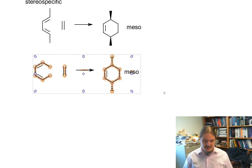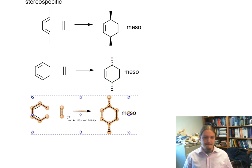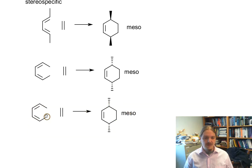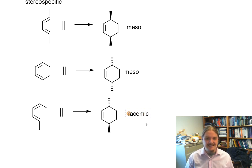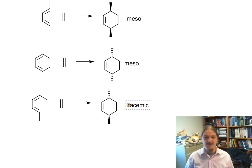But if we were doing the case where one of our alkyl groups was out and one was in, then we would get differing stereochemistry, and then this molecule is chiral, it has an enantiomer, and would form as the racemic mixture.